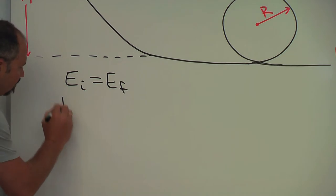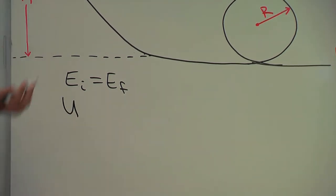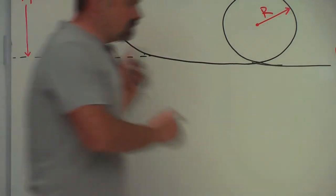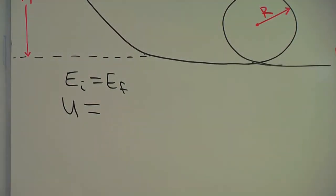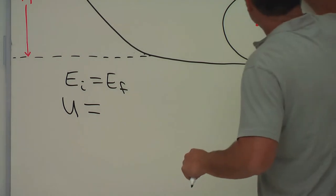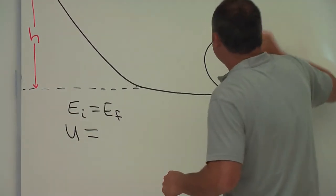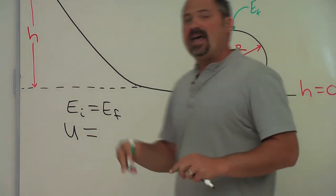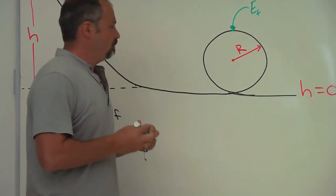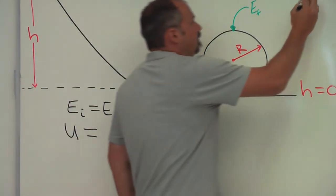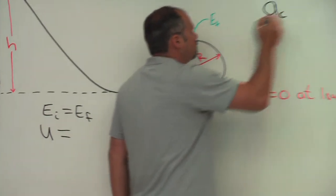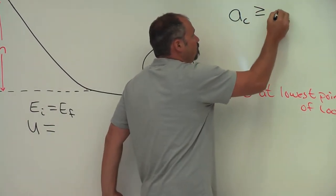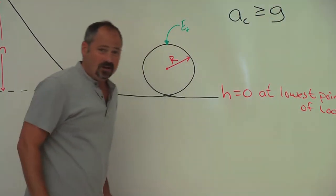Now, we want to know what is this minimum height so that the ball can make the loop. So we're going to solve for the final energy at this point, and the final energy here has to have some kinetic energy because in order to make the loop, the centripetal acceleration at the top must be greater than or equal to the acceleration of gravity.